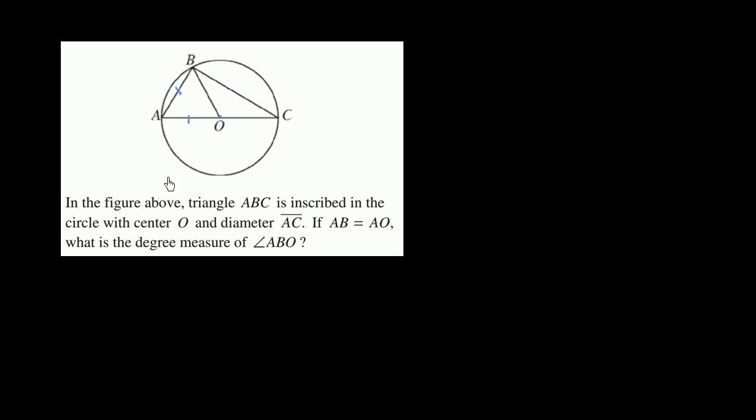The main realization here is that the length of segment AO is a radius—it goes from the center of the circle to point A. Well, OB is also a radius of the circle, so this is going to have the same length.